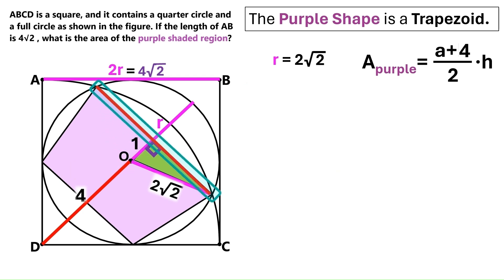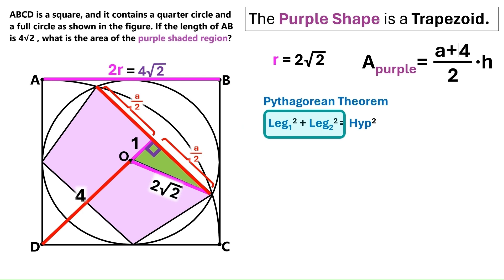Now we know this distance over here is the side a of the purple trapezoid. And this radius cuts the side a into two equal halves. Having said that, we can go back to our right triangle. And use the Pythagorean theorem, which states that the sum of the squares of the legs of a right triangle equals the square of the hypotenuse.